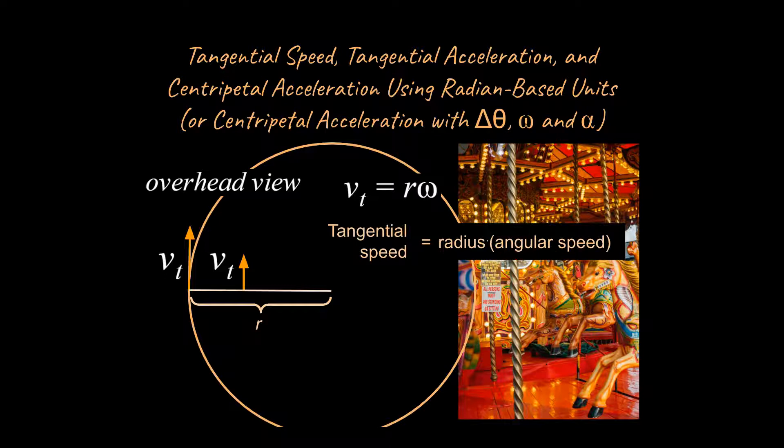If this thing is going slower when it starts out and later at some time it has a faster angular speed, then of course it would have a greater tangential speed.